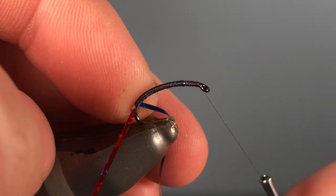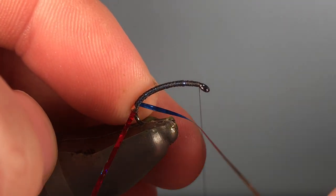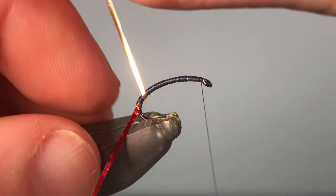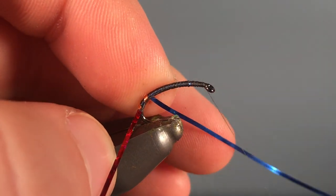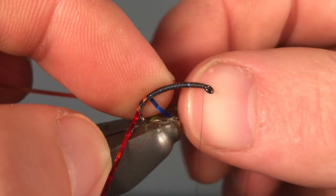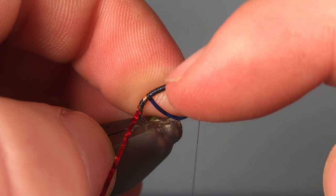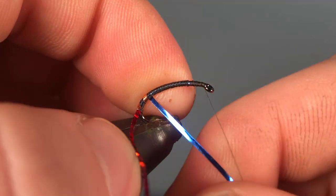And start wrapping towards the eye of the hook. Now this can be a bit tricky sometimes, so you've just got to be patient with it because it likes to flip back in different ways. But the technique that I use is putting your finger like so, and that holds it down so you don't lose the wrap.